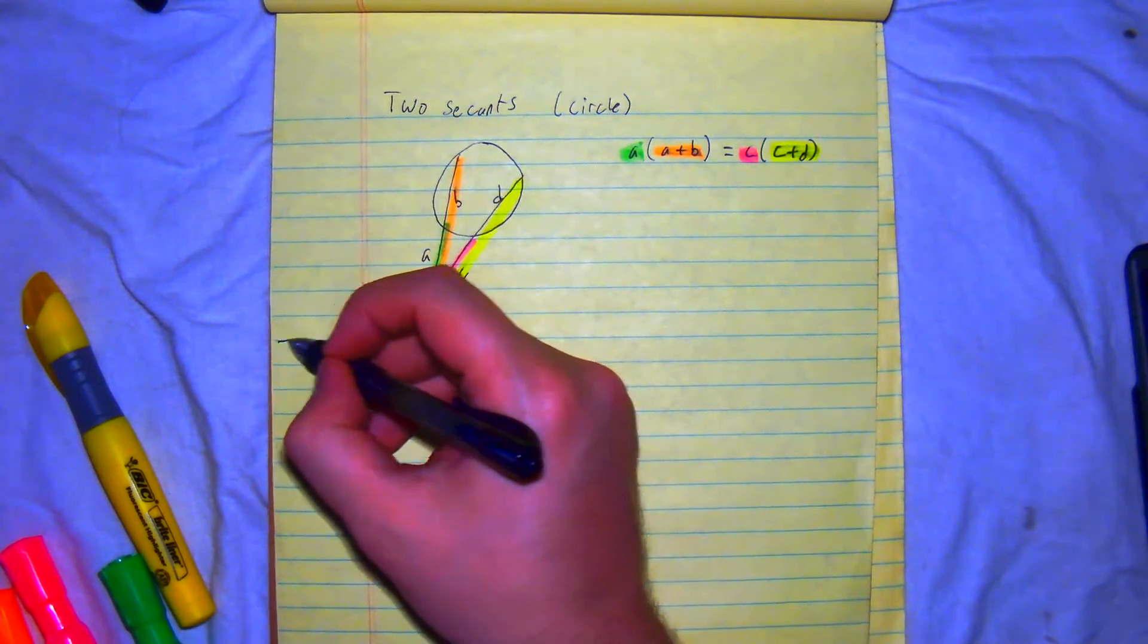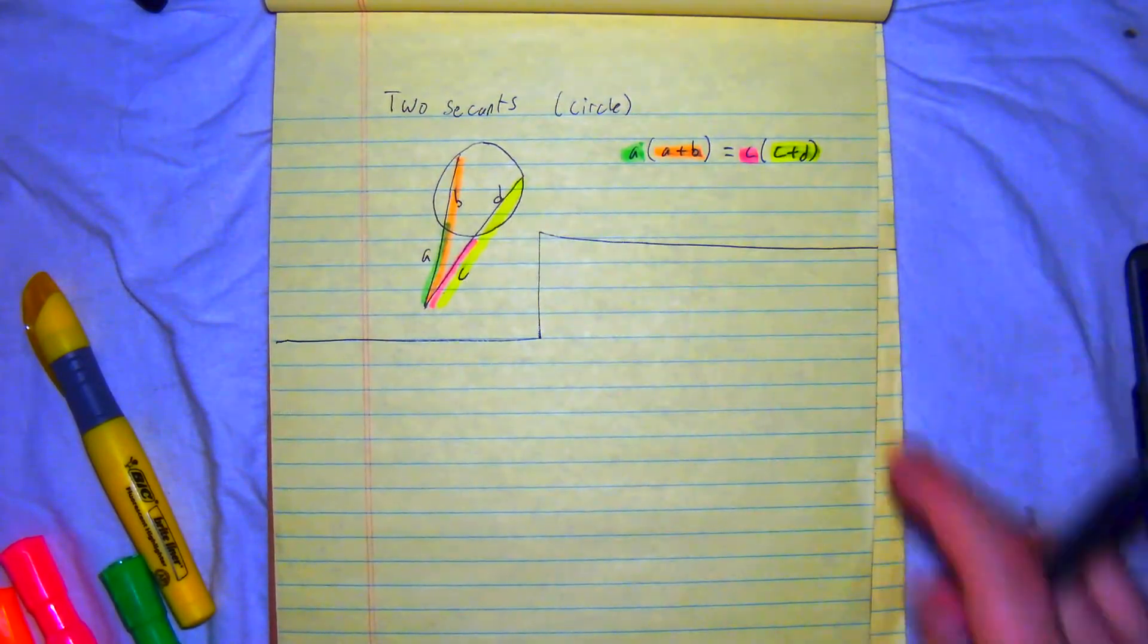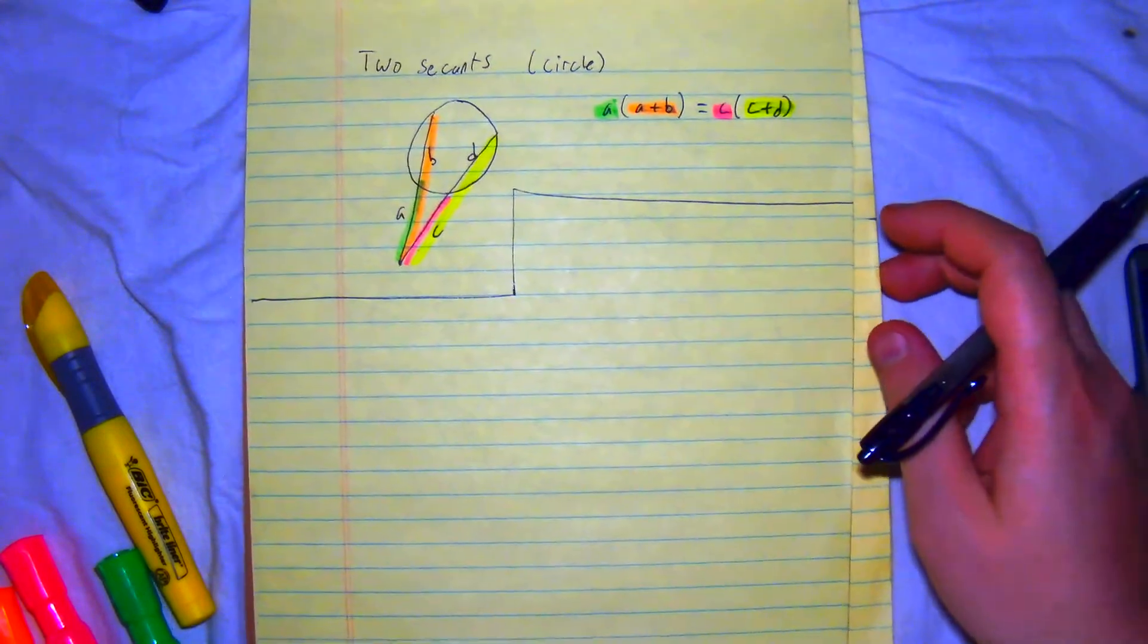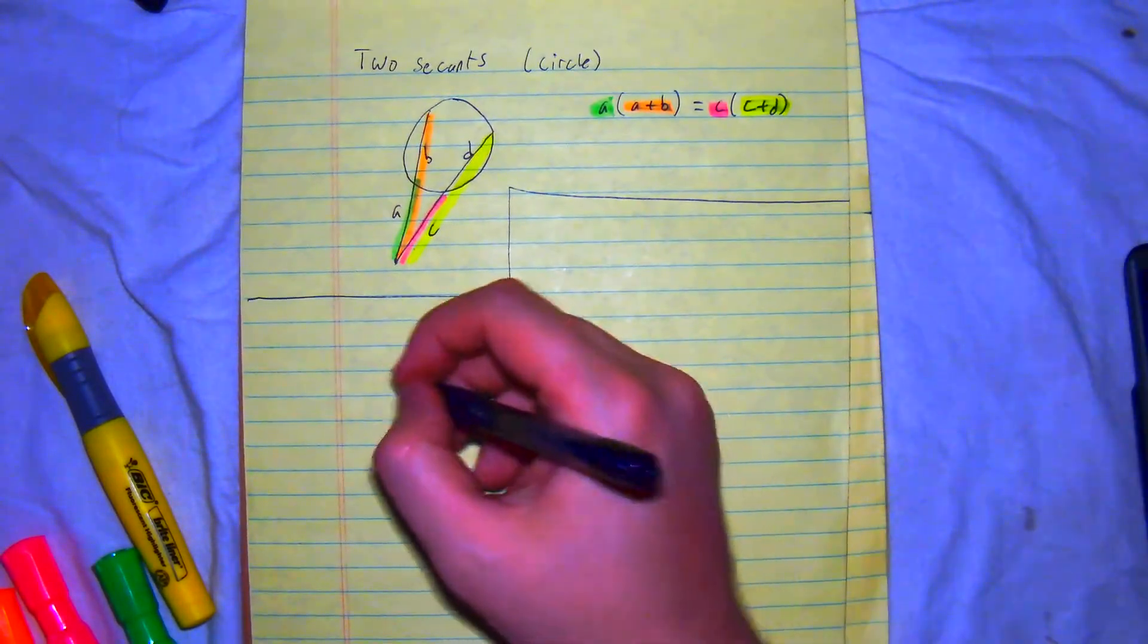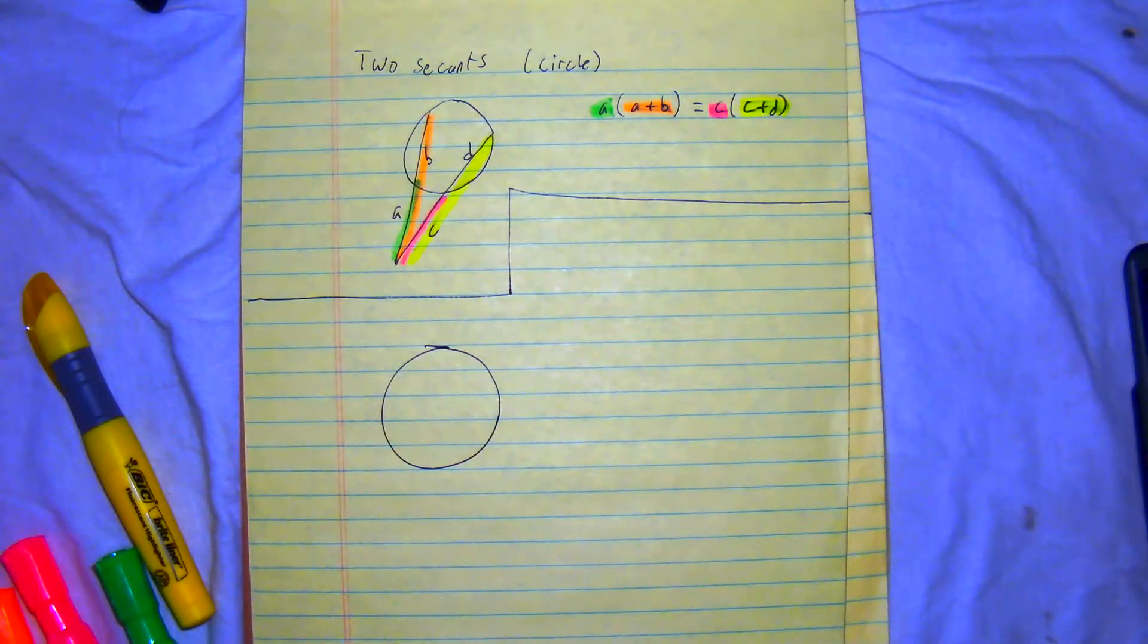All right, let's take a look at a linear example. And then we'll move on from that. And this will be the final part of the notes for the week. All right, we draw our circle.